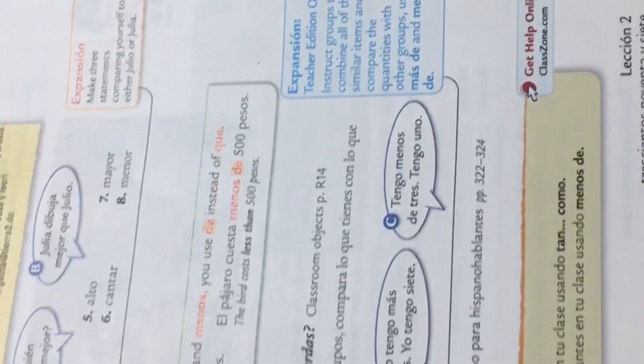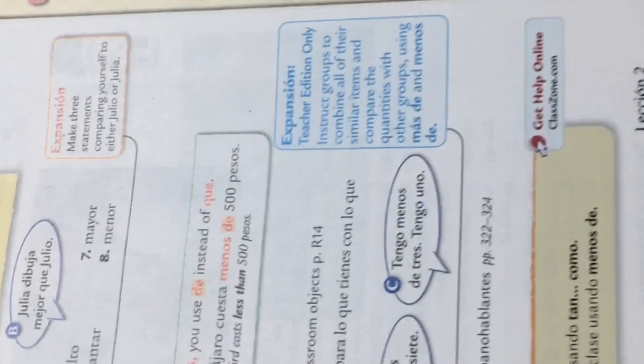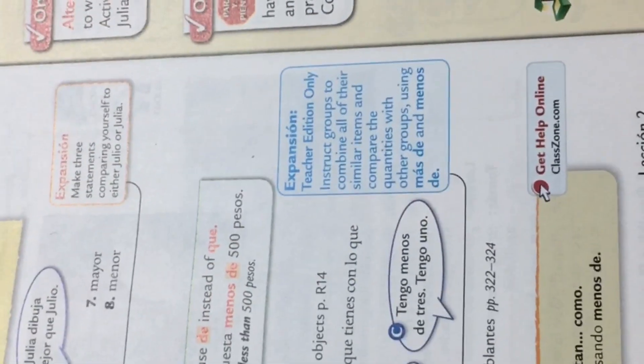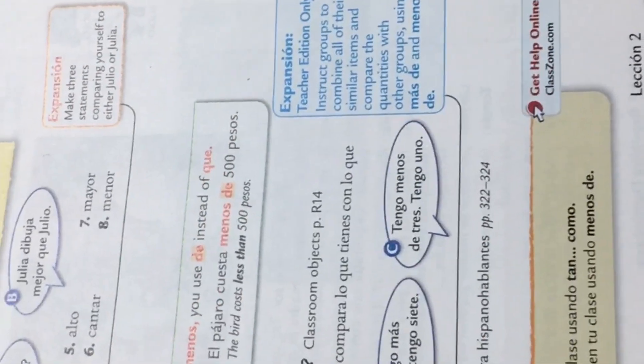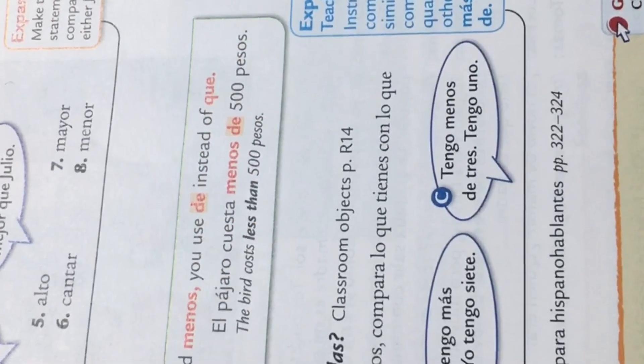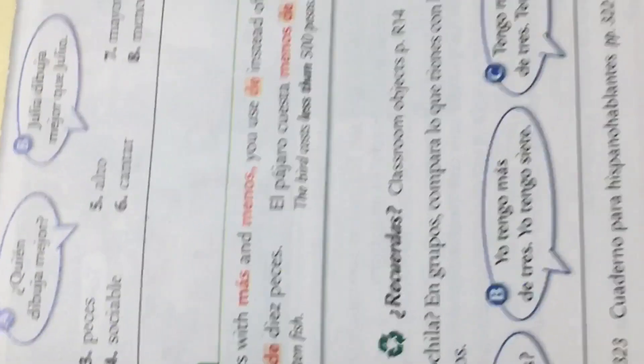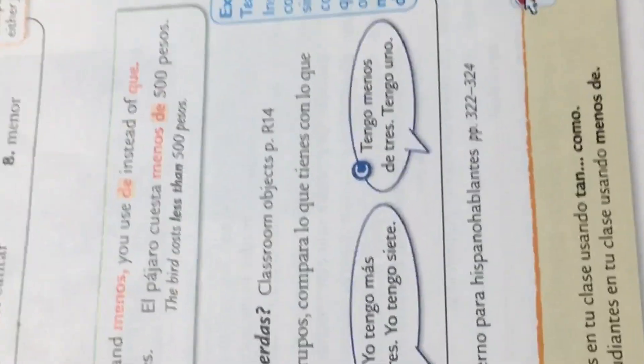We're continuing in the text on page 397. This nota gramatical says: to compare numbers, más and menos use de instead of que. So for example, if you want to say Susan has more than ten fish: Susana tiene más de diez peces. Or the bird costs less than 500 pesos: el pájaro cuesta menos de quinientos pesos. Instead of saying más que, when you have a number you just switch the que to a de — más de.